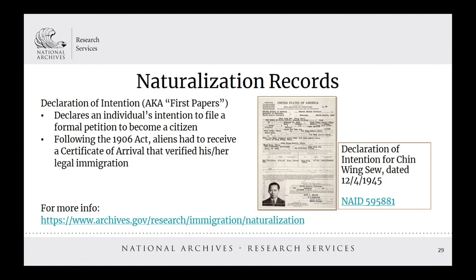Naturalization records are best understood by looking at the kinds of records created during the process. The declaration of intention, also called first papers, declared an individual's intention to file a formal petition to become a citizen. Following the 1906 act, aliens had to receive a certificate of arrival that verified legal immigration to the U.S., and you will often see the certificate of arrival with the declaration of intention in NARA's holdings. Early declarations are very limited in details — it could literally just be the individual's name, country of origin, and the date they appeared in court. Later documents include details about family, entry to the U.S., and even have a photo attached. Starting in the mid-1950s, declarations were no longer required, so you begin to see only the petition for naturalization available.